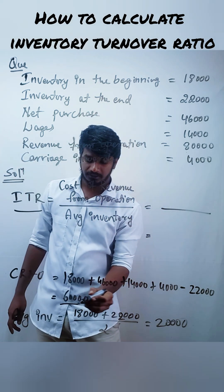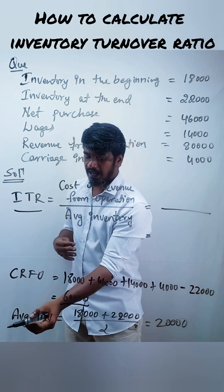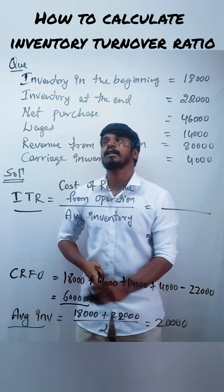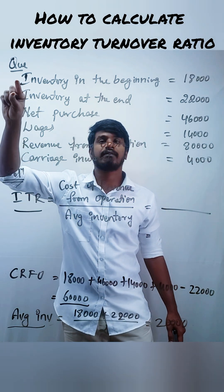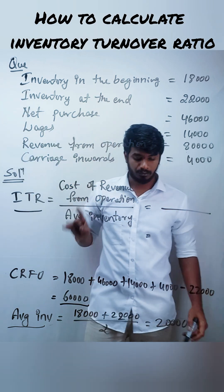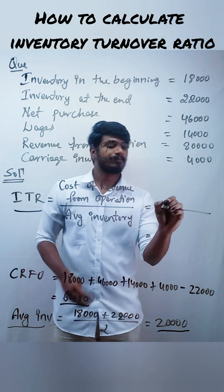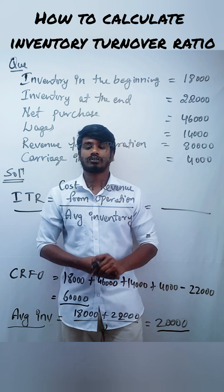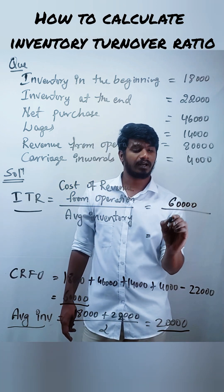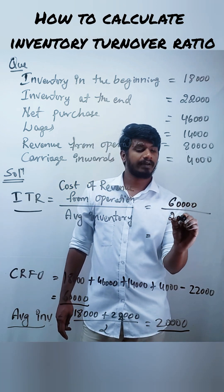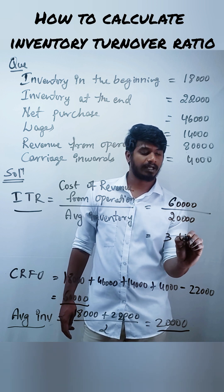If you do that you will get 60,000. Next, for average inventory, just opening inventory plus closing inventory divided by 2 — you will get 20,000. So the cost of revenue from operations is 60,000, divided by 20,000, which is equal to 3 times.